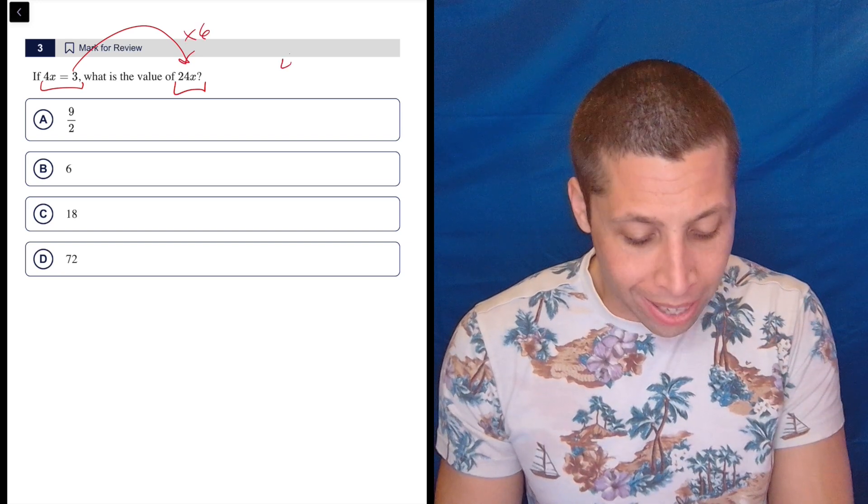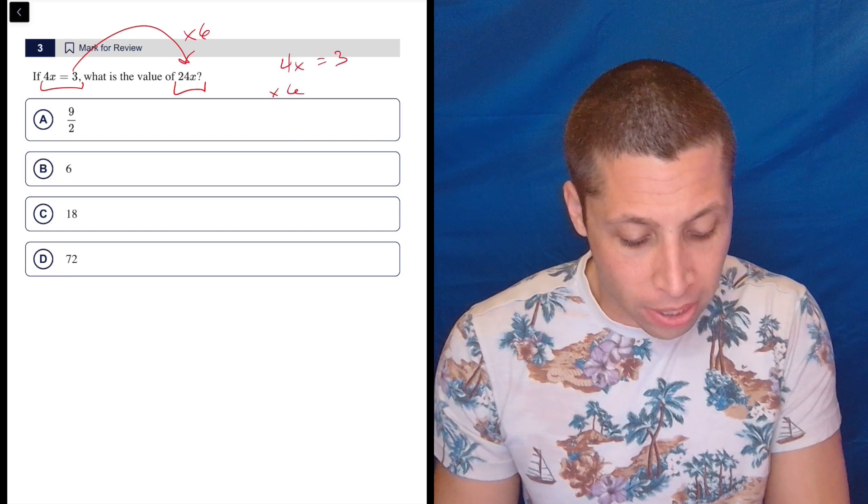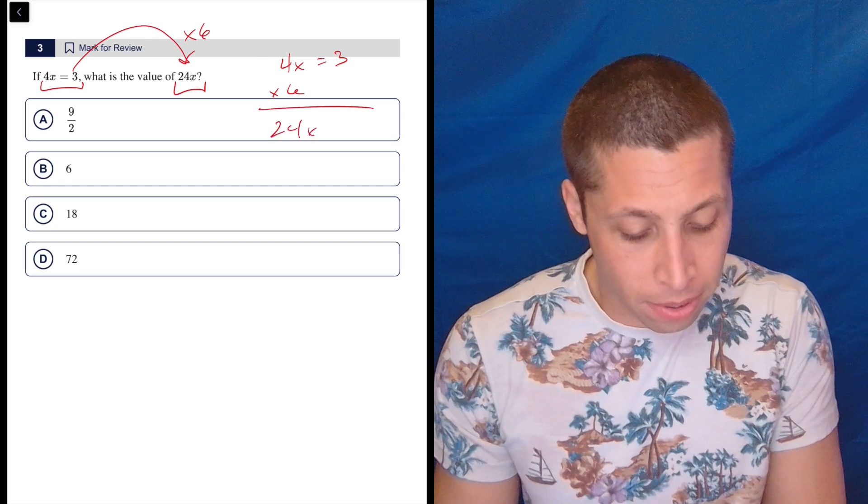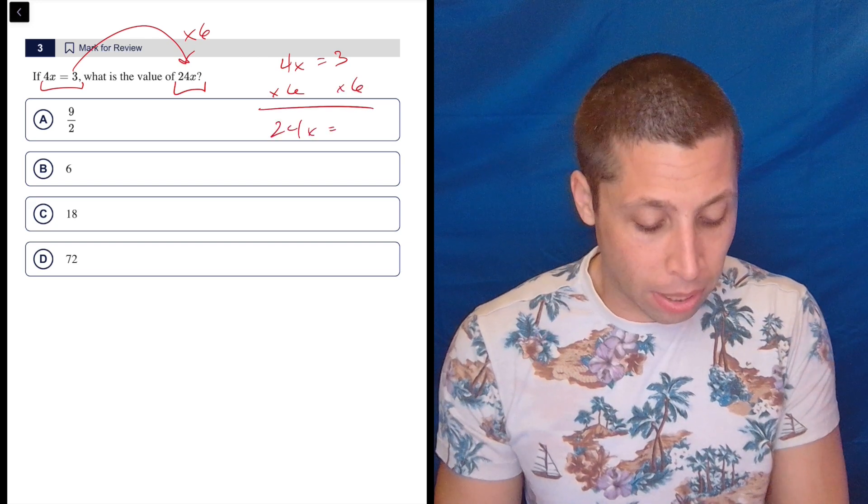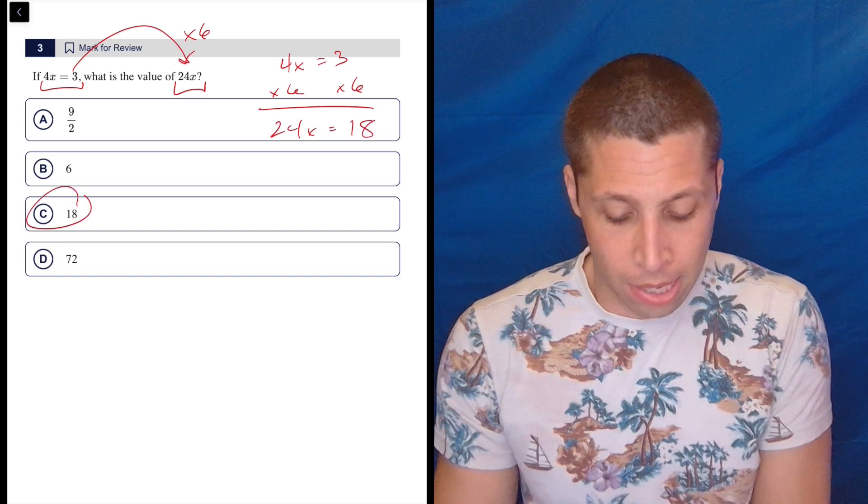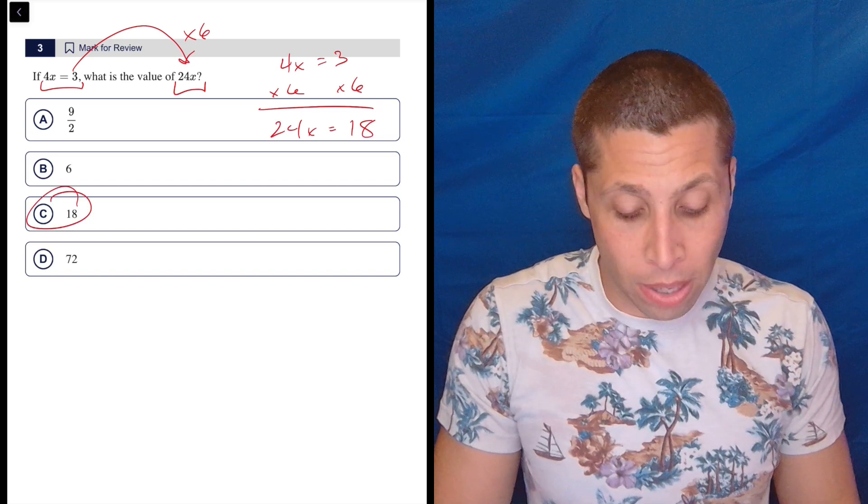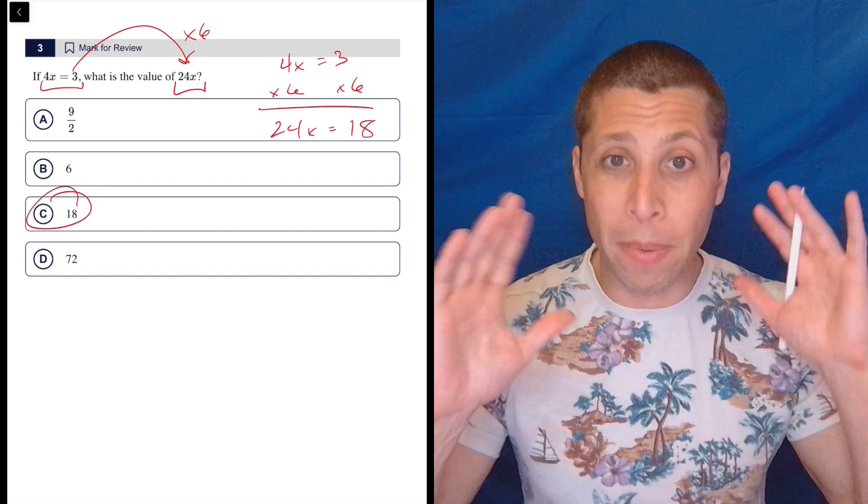So if 4x times 6 is equal to 24x, then we do that to both sides of the equation. Basic algebra: 3 times 6 is 18. And that's the answer. That's it, that's the whole thing. I could do that without scratch paper. That's all something that's just kind of automatic.